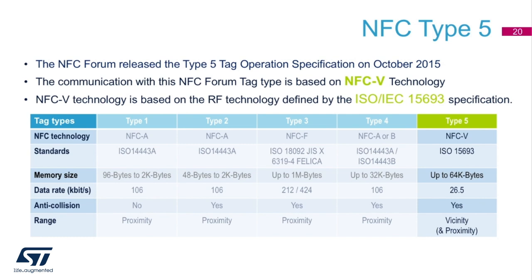NFC Type 5 was introduced in 2015 and is supported by all major cell phone manufacturers today. The Type 5 technology can support a data rate of 26.5 kilobits per second, which is generally fast enough for most applications as most tags carry a small amount of data. ST also offers a fast transfer mode with its ST25DV dynamic tag that allows communication directly from a reader to a microcontroller at 53 kilobits per second.